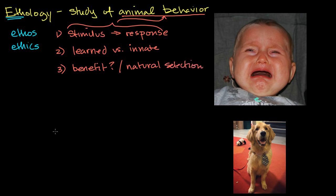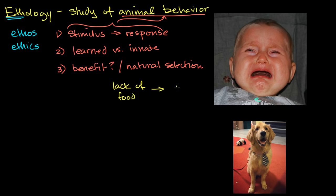Now that we have our framework, let's think about some animal behaviors. Right over here, I have a baby crying. And yes, we humans — it's nice to remind ourselves that we are animals. The behavior here is the child crying, and let's assume this child is maybe hungry. The stimulus is a lack of food, and it leads to the response of crying.